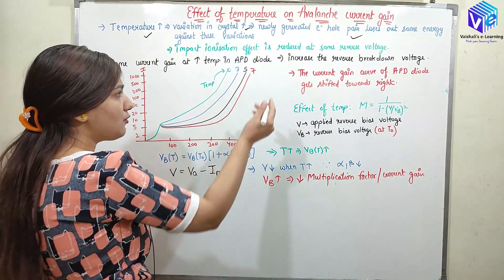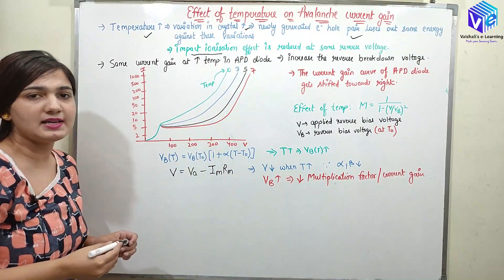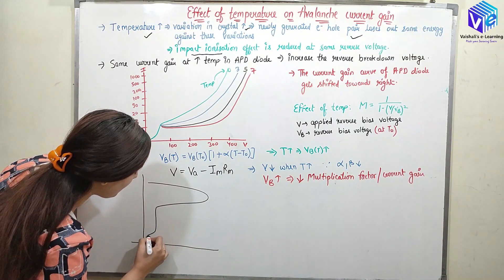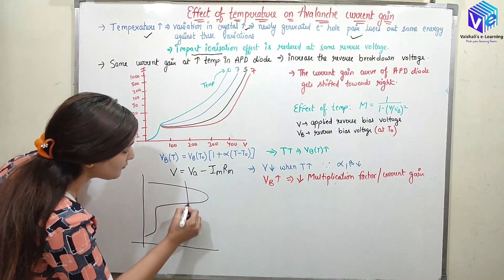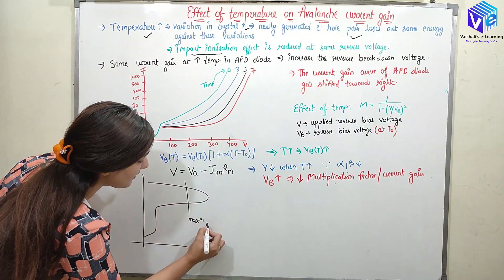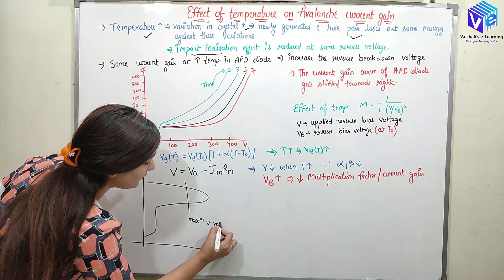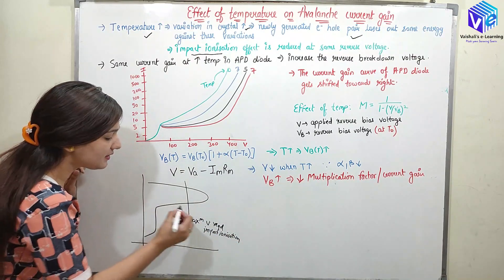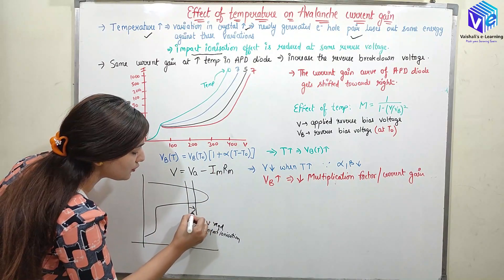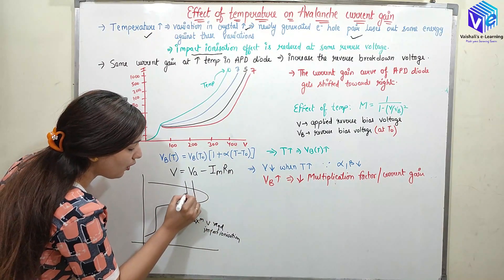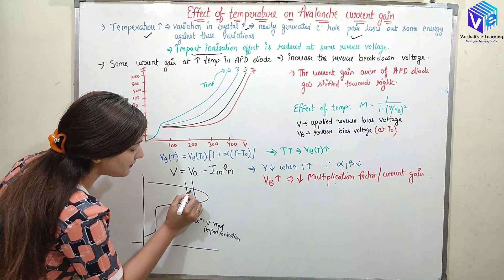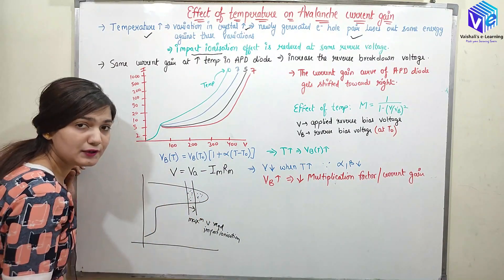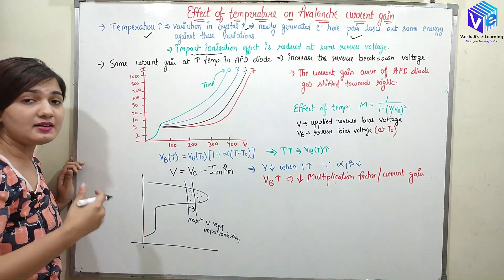When the breakdown voltage is increased, we will have less impact ionization. If you remember the energy band diagram, in the gain region we had this type of diagram with a stable diagram. This was the maximum voltage required for impact ionization. When I increase the temperature, this maximum voltage is going to shift upward. So all of the impact ionization that was happening in this region will now happen only at this higher region.